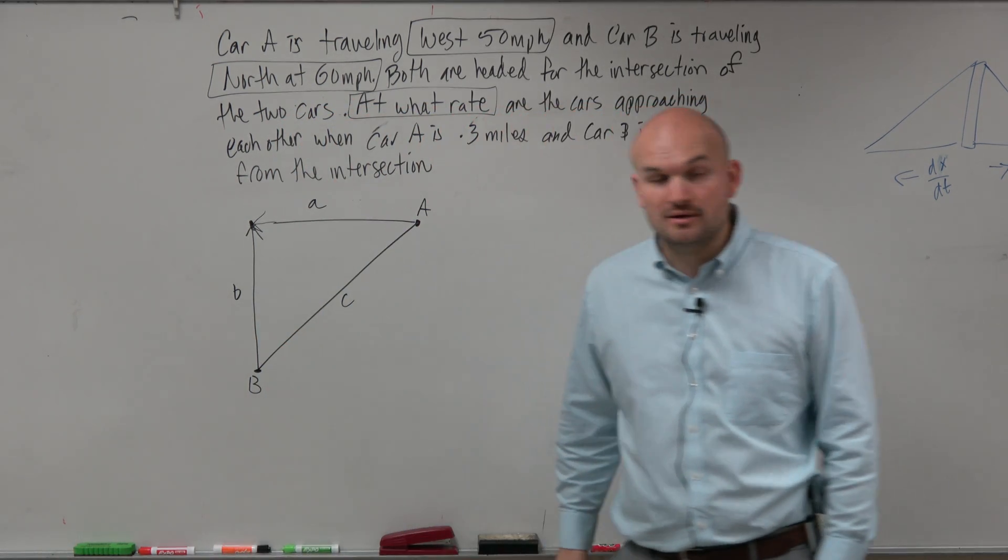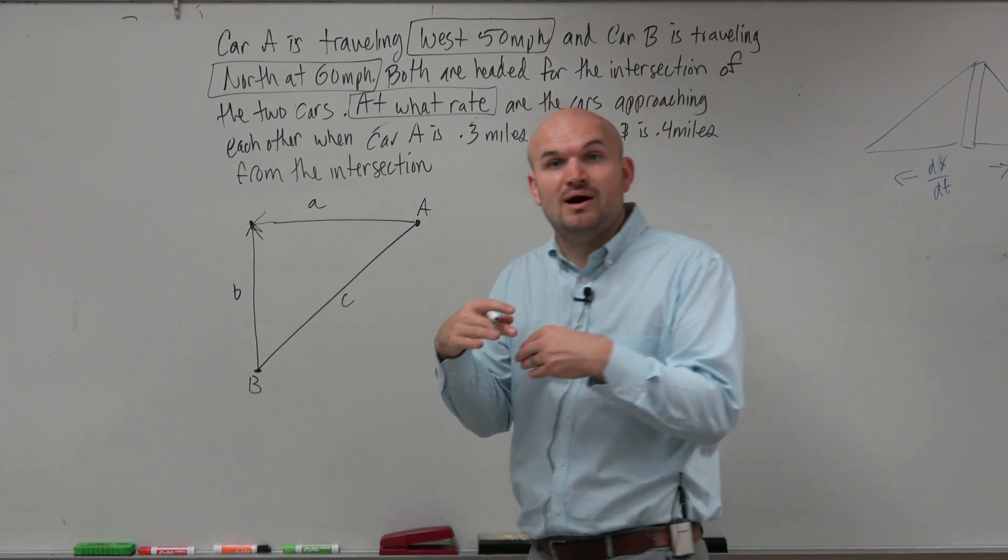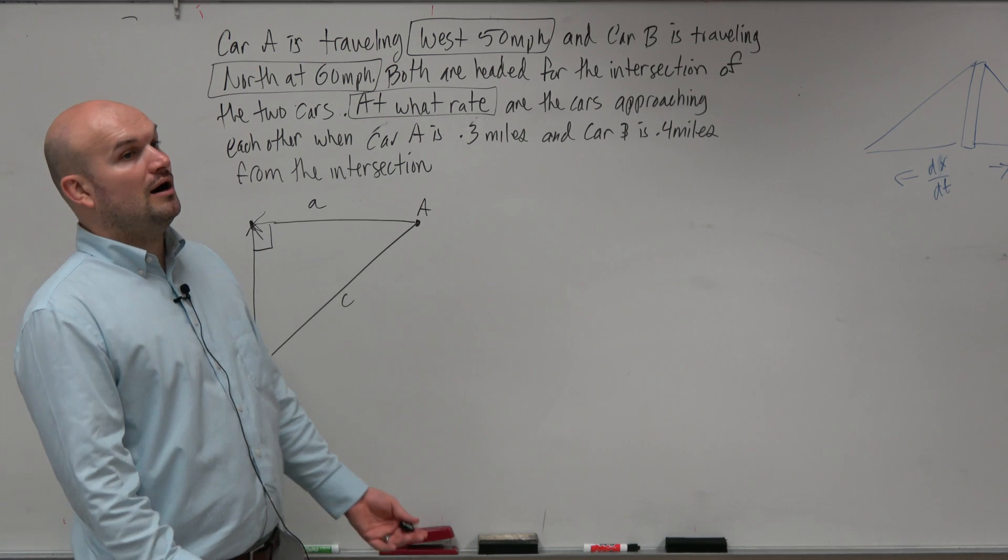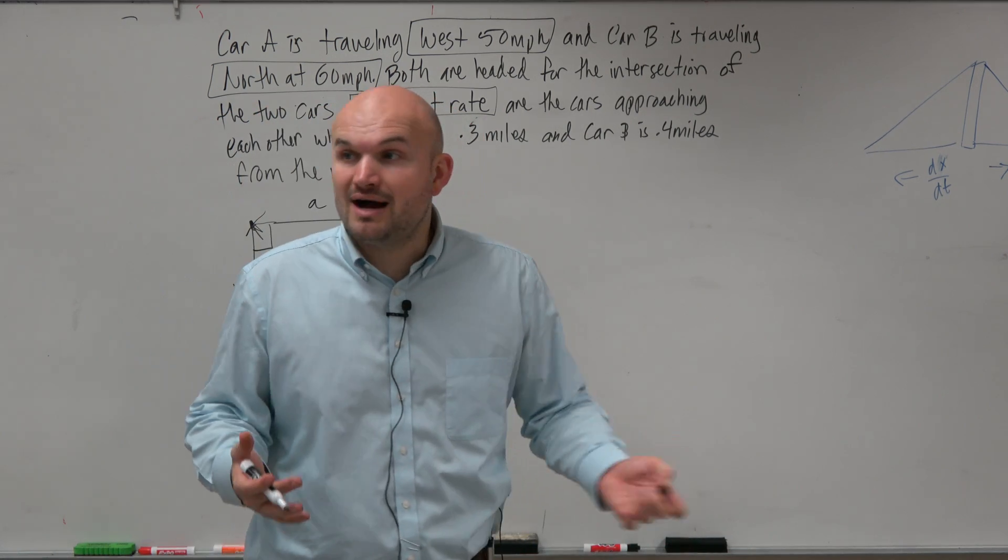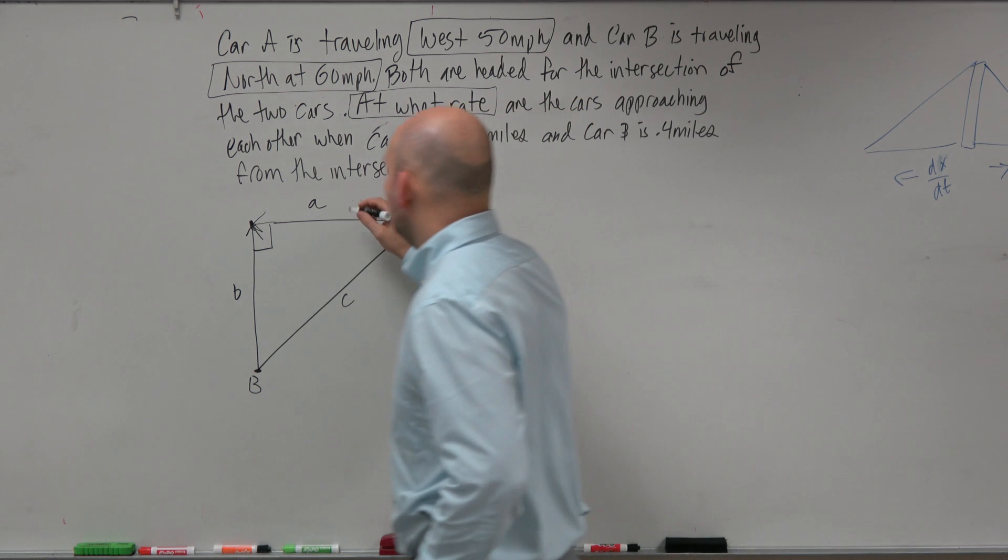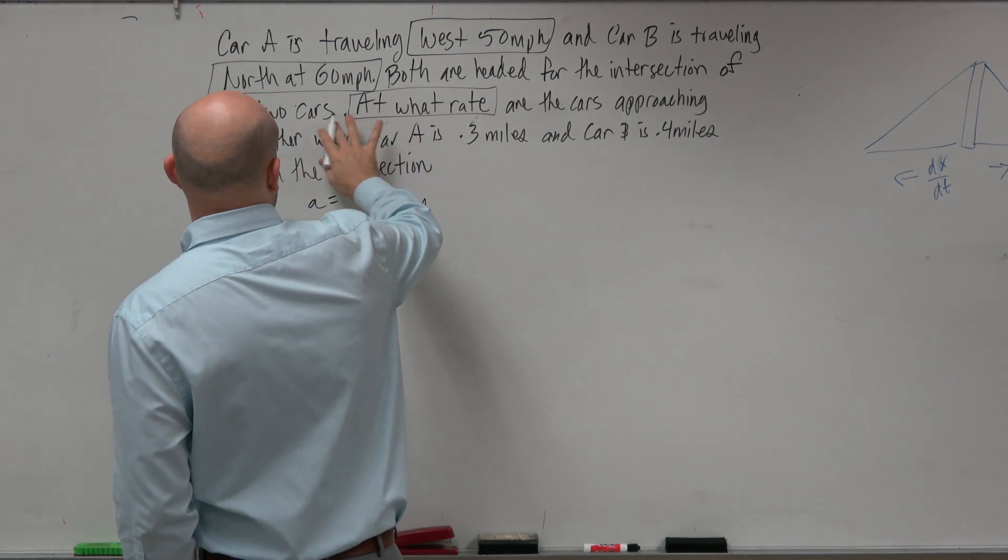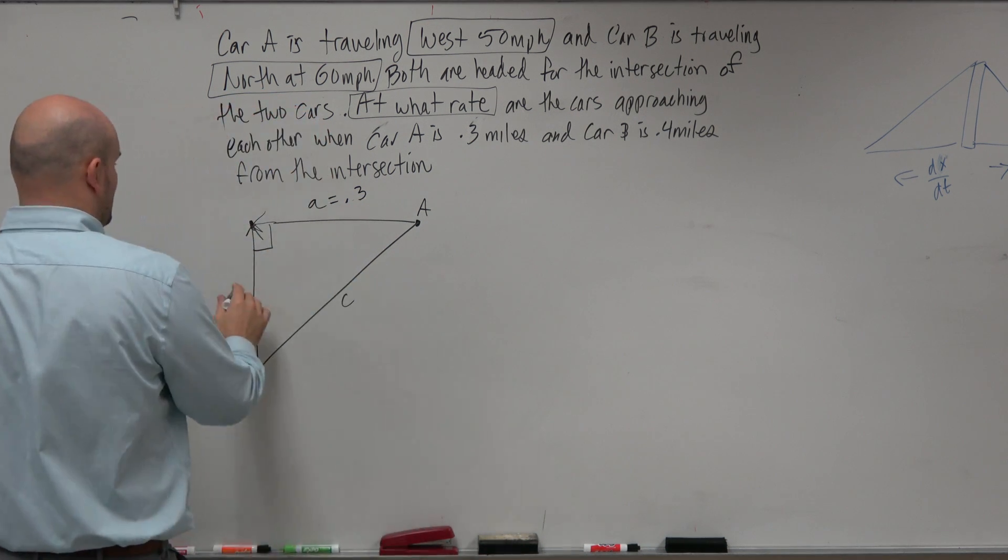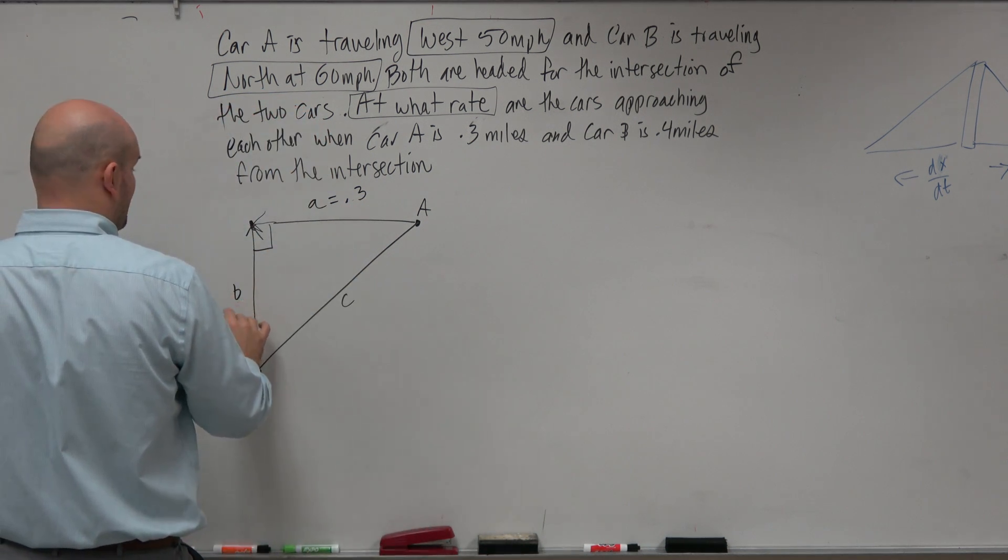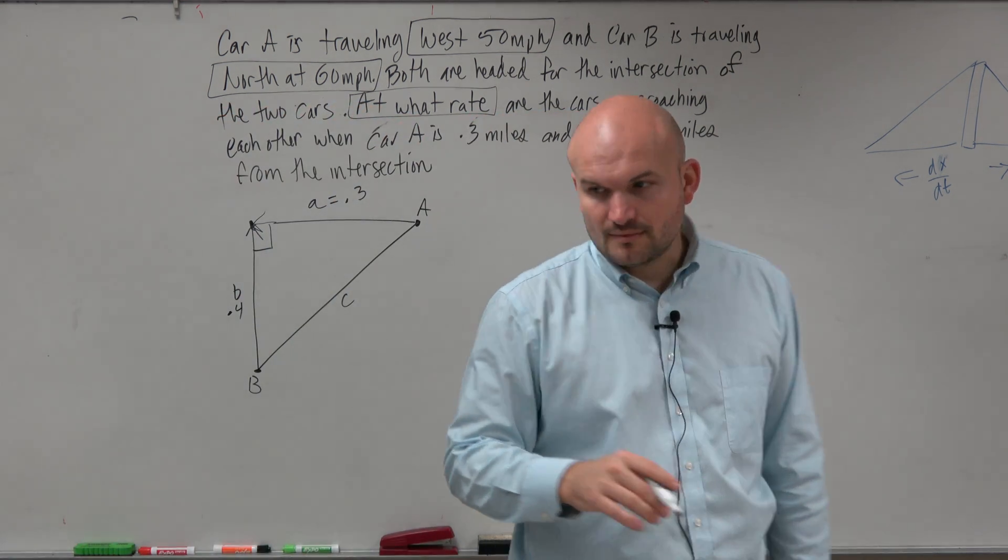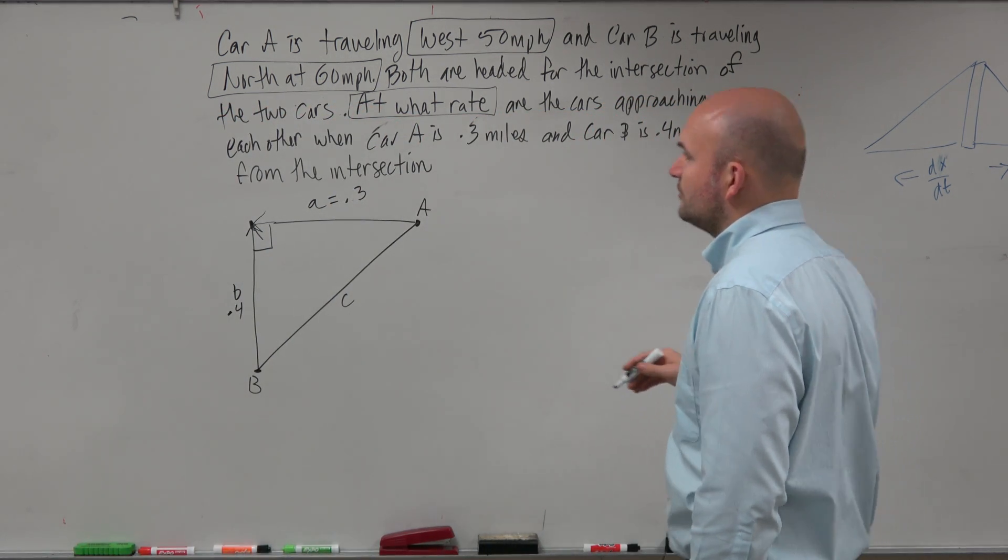If we're dealing with north and west, we know that we now created a right triangle. Right triangle, because now I can create a relationship. We know that A, how far is he away? 0.3. And we know that B is going to be 0.4. So let's look at our other rates.